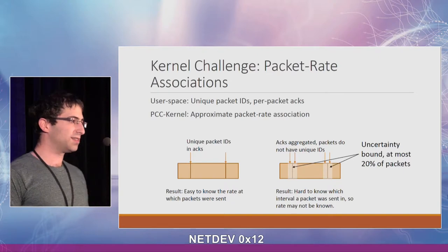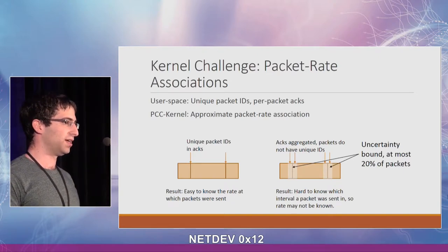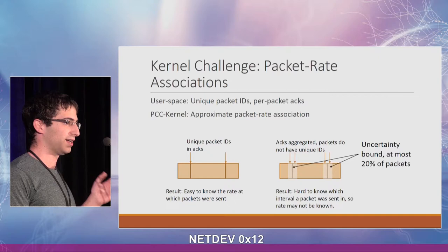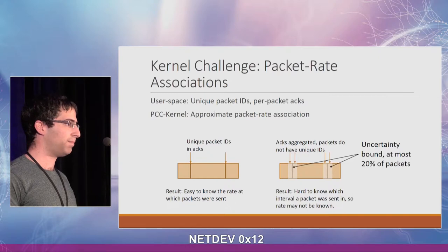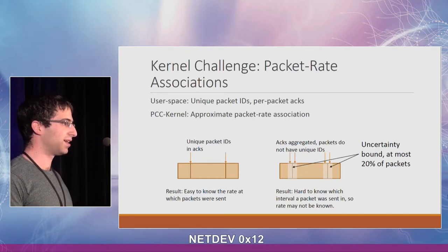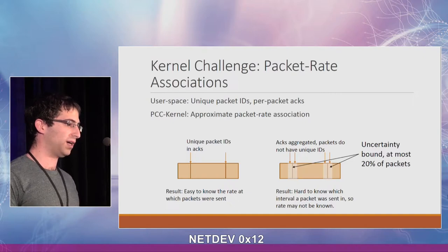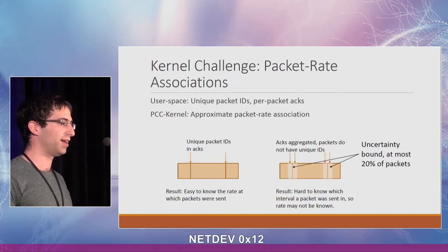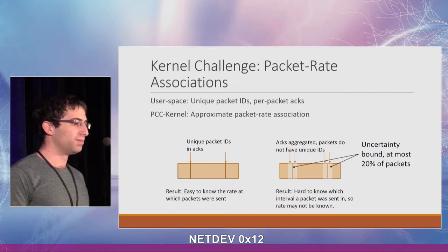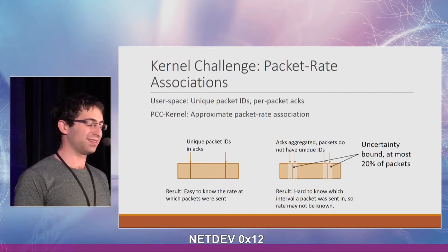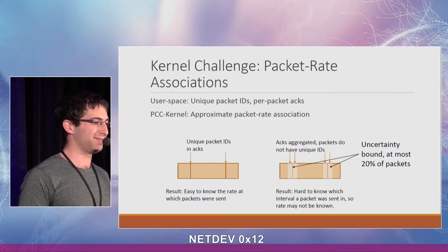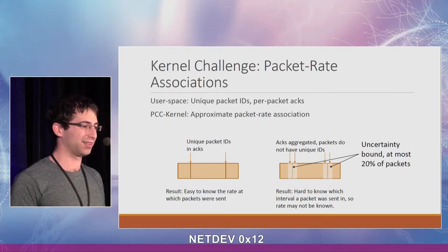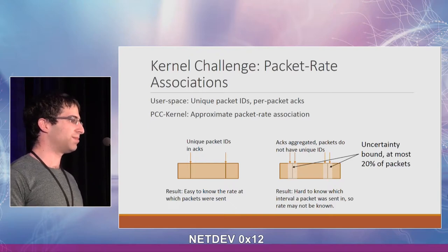The user-space implementations were based on UDT, which had unique packet IDs — similar to what we see with QUIC — and per-packet acknowledgements, making it easy to figure out what packet was lost and exactly which interval it was sent in. The kernel implementation doesn't have these because TCP doesn't have unique packet IDs or per-packet acknowledgements, so we only have an approximate environment.